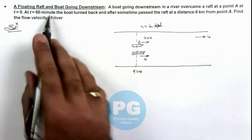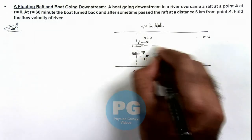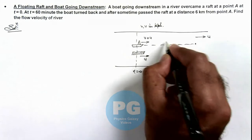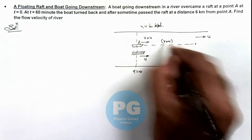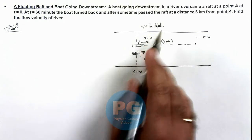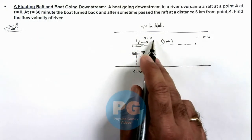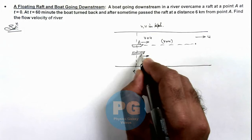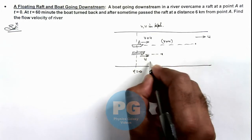After 60 minutes, that is after one hour, the boat will travel a distance equal to v plus u. Because we are taking speeds in kilometers per hour, in one hour it will travel a distance v plus u. In that duration, the raft will travel a distance u.